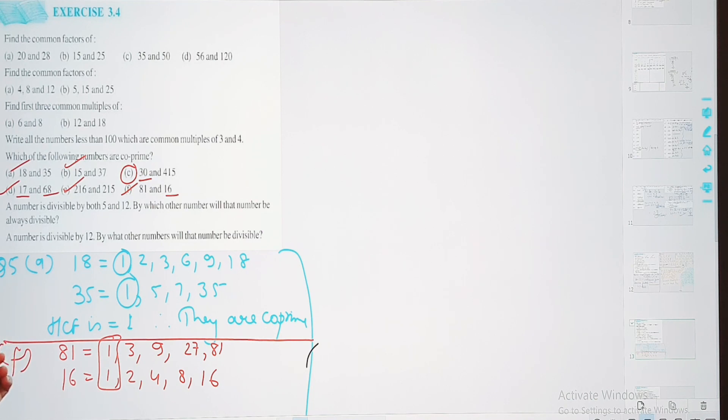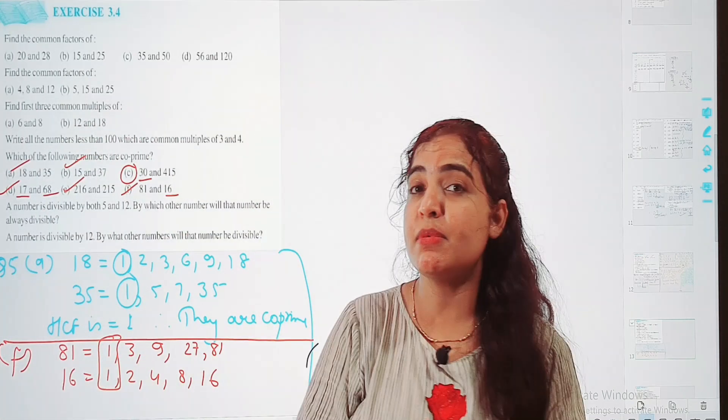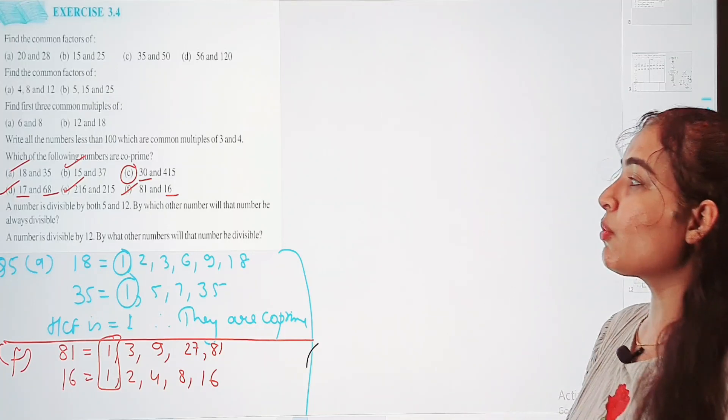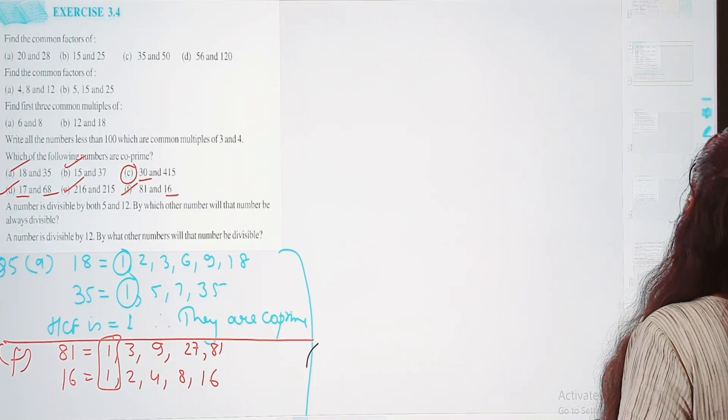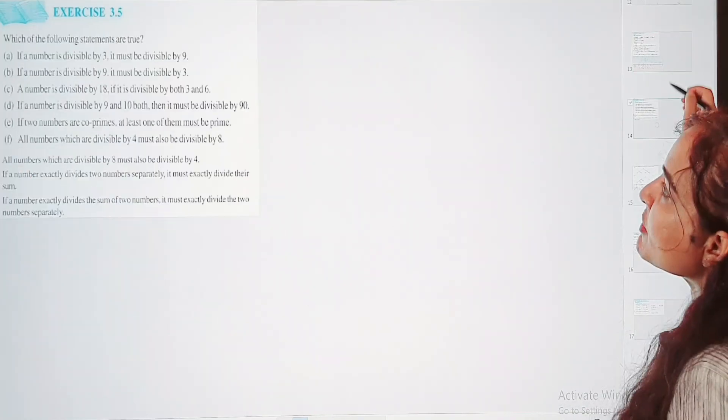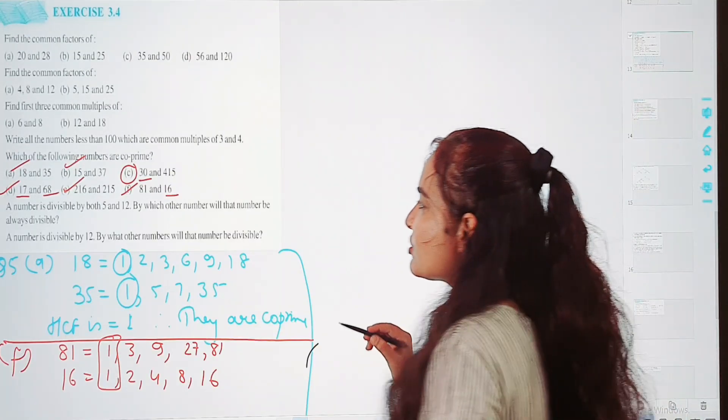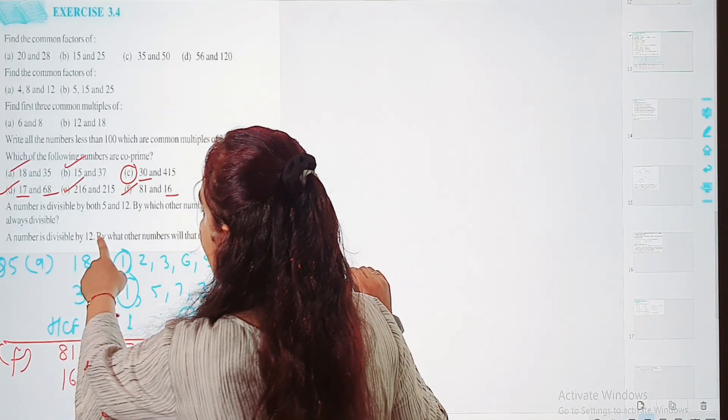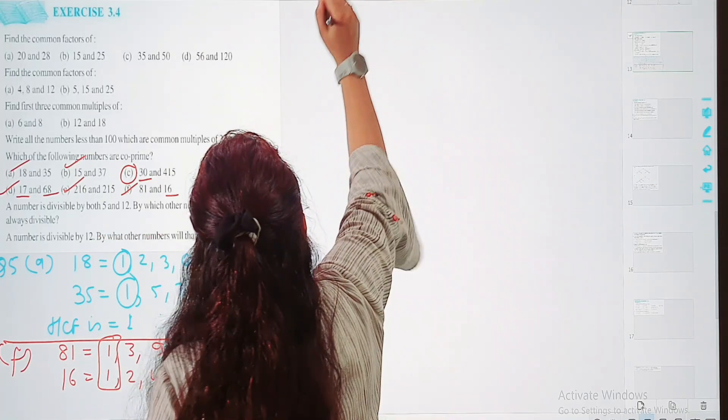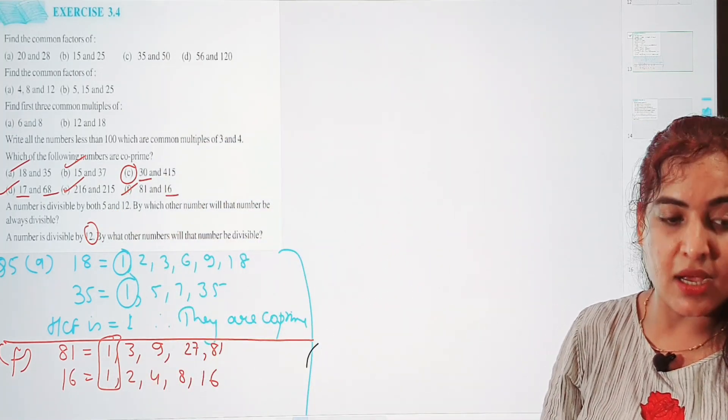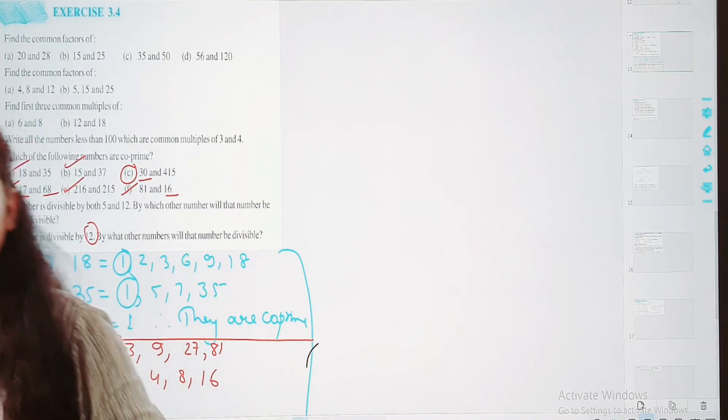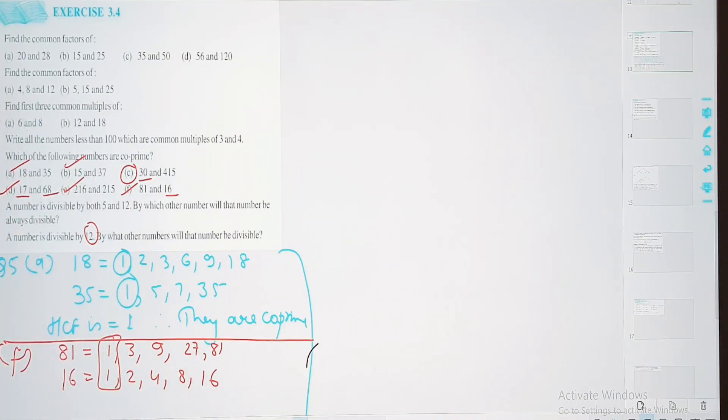Next question. A number which is divisible by both 5 and 12, by which other number will that number be always divisible? Agar eek aasa number joki 5 se bhi divisible or 12 se bhi divisible hai, to aur concern number ho ga joki in dono se hamayisha hi divisible ho ga. Aapko isma LCM lena hai. Aapko semaj me aega ki aap kya kar raha ho. Question number 6 joh hai, a number divisible by 5 and 12, by what number it will be divisible?